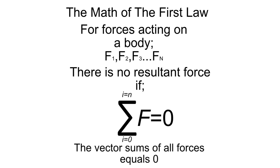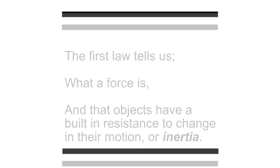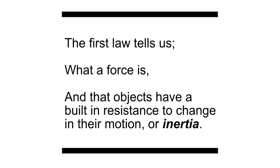Let's go into the math of the first law. For all forces acting on a body, F1, F2, F3, up to Fn, however many forces there are acting on this body, there is no resultant force if the summation of all forces equals zero. And when I say summation, I mean the vector summation of all forces equals zero. This simply means there is no resultant force acting on the body.